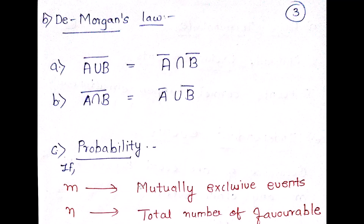Next is De Morgan's Law. De Morgan's Law states that the complement of A union B is equal to A-bar intersection B-bar. The upper U sign indicates union and the lower U sign indicates intersection. Similarly, the complement of A intersection B is equal to A-bar union B-bar. All these are also captured on my Instagram page.